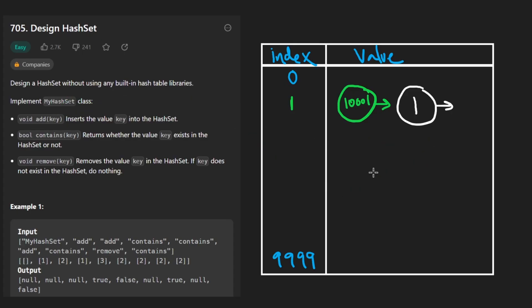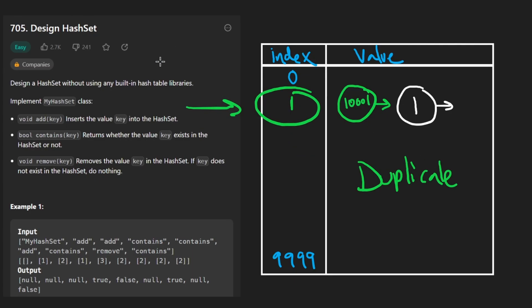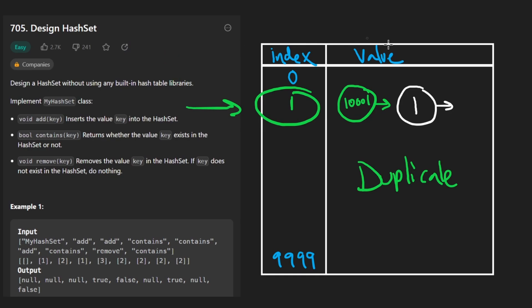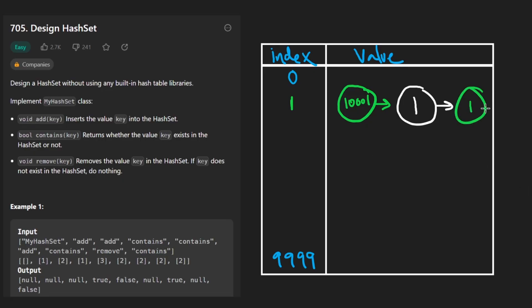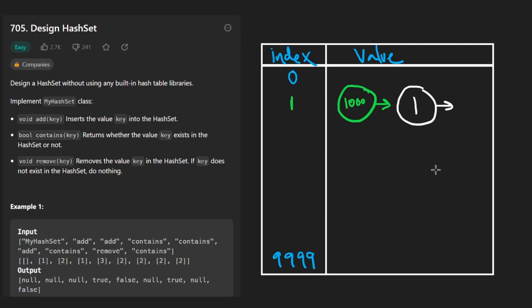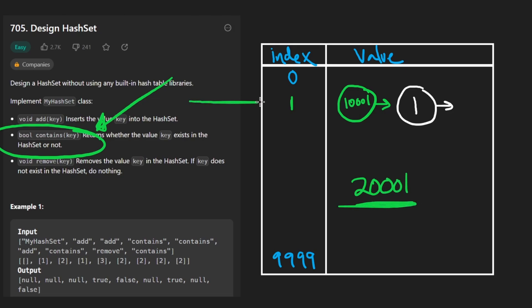Storing the key in each node is important because we don't want duplicates. If we try to add the key '1' again, it will hash to the same position. We look at the linked list and if we already have a node with key '1', there's no need to add another one. For 'contains', we search the linked list at the hashed index and return whether the key exists there.